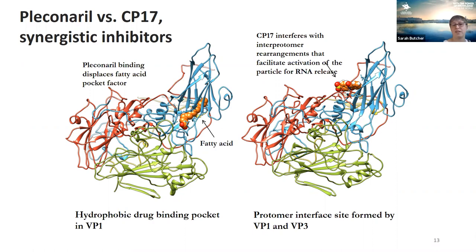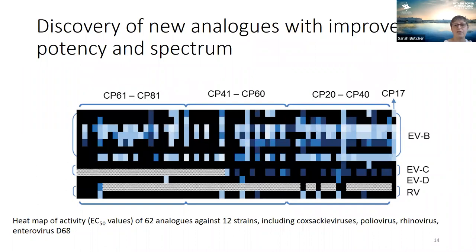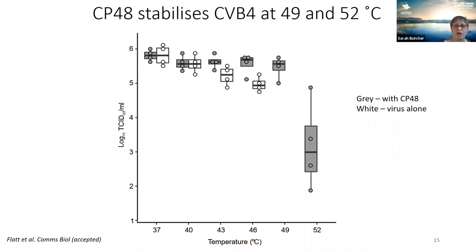The reason it works is that it interferes with the rearrangements that facilitate activation of the particle for RNA release. Johan then performed a comprehensive screen of 62 analogues against 12 different strains of entero- and rhinoviruses. This heat map summarises all those results. Compound 48 emerged as effective against a large number of enteroviruses and also showed a few hits against rhinoviruses, making it the broadest-range compound identified.